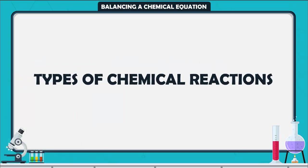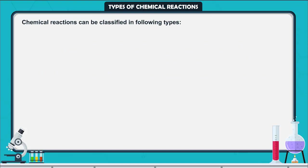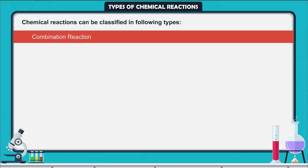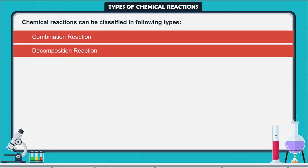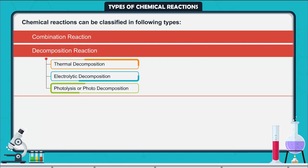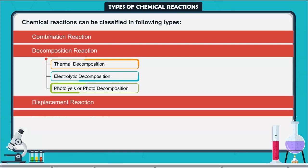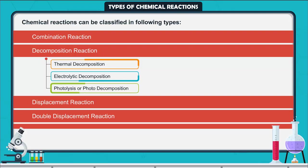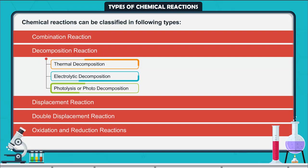Types of chemical reactions. Chemical reactions can be classified into the following types: combination reaction, decomposition reaction — which has three parts: thermal decomposition, electrolytic decomposition, and photolysis or photodecomposition — displacement reaction, double displacement reaction, and oxidation and reduction reactions.